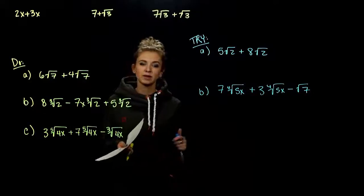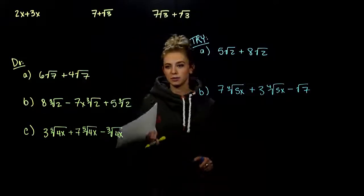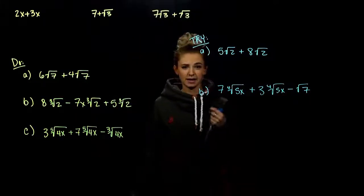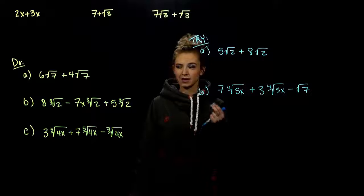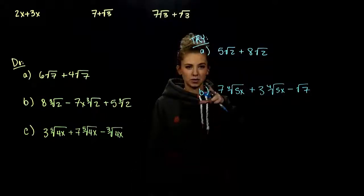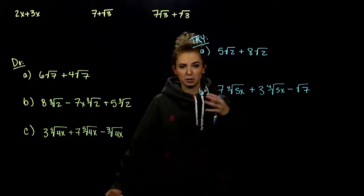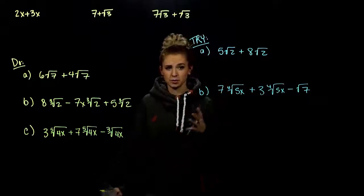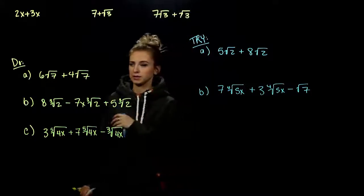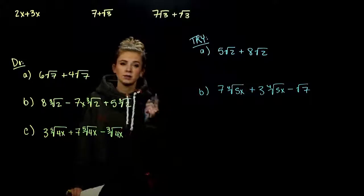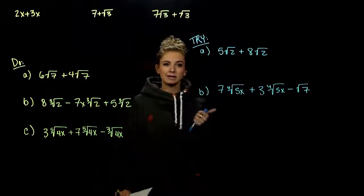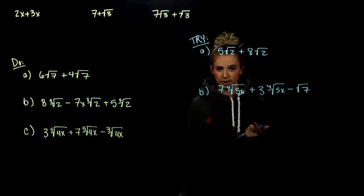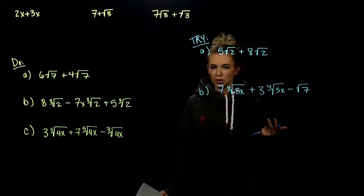We've dealt with multiplication and division of radicals. When we have the same index and a non-negative radicand, we can either combine them or split them up, whichever helps in that situation. Now we're going to look at addition and subtraction with radicals.